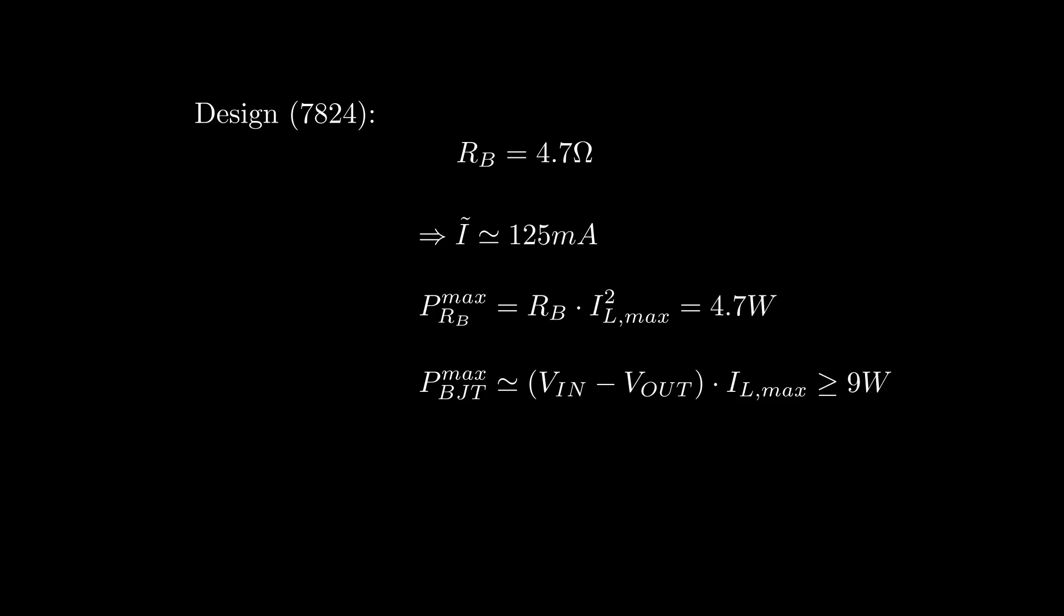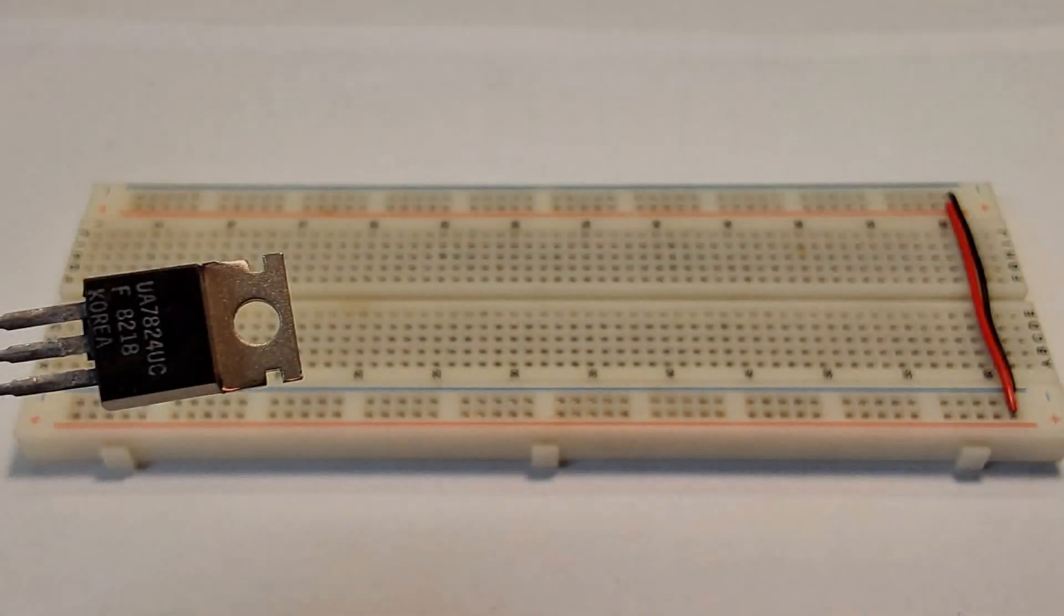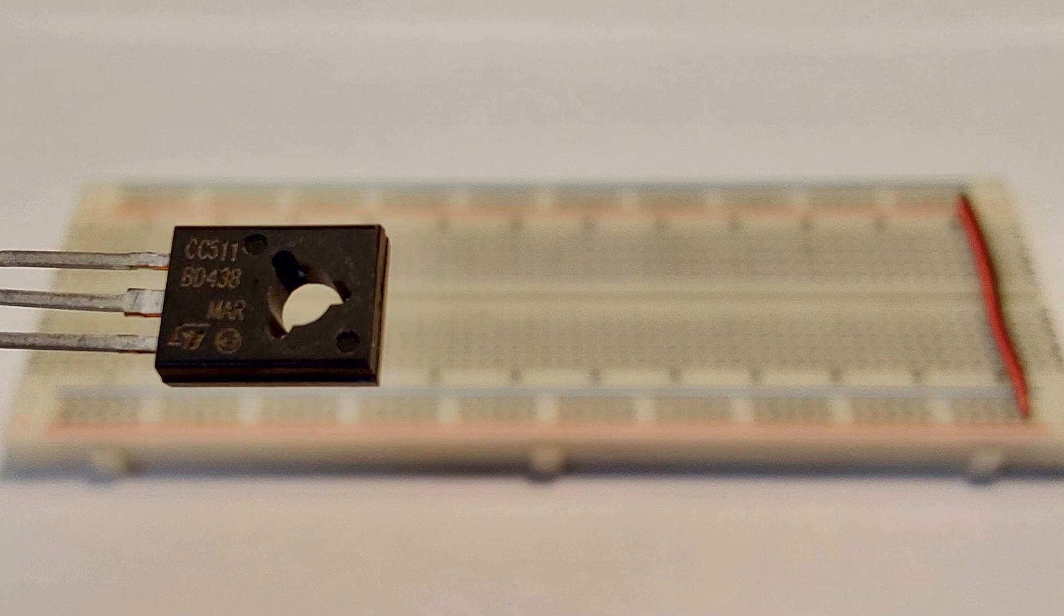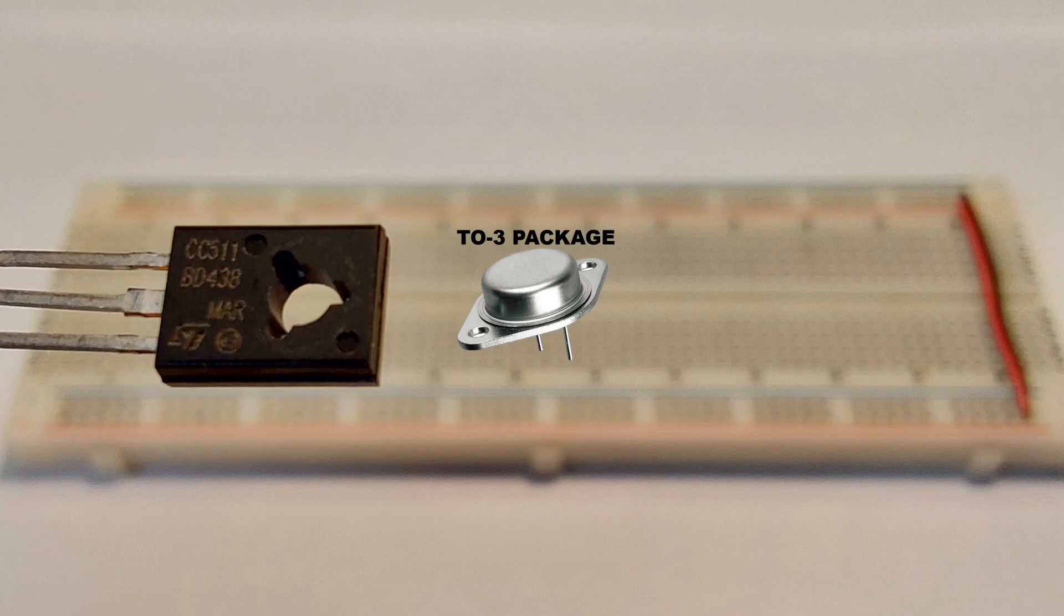For those who are still with me after this little math, we can start building the circuit. We need a 7824 and a suitable transistor. I've chosen a BD438 bipolar, which is actually a mid-powered transistor, only because power transistors like the more famous 2N2955 usually come in a TO-3 package, which is quite an asshole to work with on a breadboard.